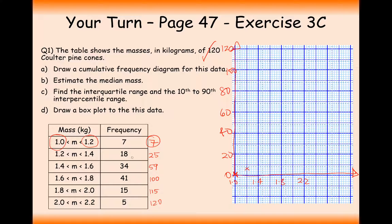The next thing I'm going to do is put a marker at 1.2, 7. So a little marker there. Try and be as accurate as you can with these. Next one is 1.4, 25. Next one is 1.6, 59. Next one is 1.8, 100. Next one is 2.0, 115. And the next one is 2.2, 120. And remember with cumulative frequency diagrams, it's a curved line that goes through all of these points exactly.